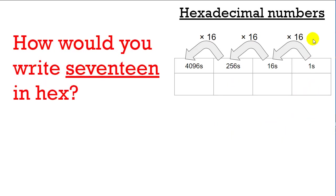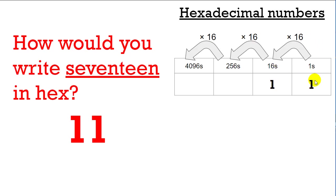Let's do some examples. How would you write seventeen in hexadecimal? Well, to write seventeen you need one sixteen and one one. So you write it down as one-one in hex — one sixteen and one one is seventeen. This is how a computer would see seventeen when you're doing colors.